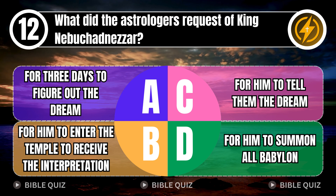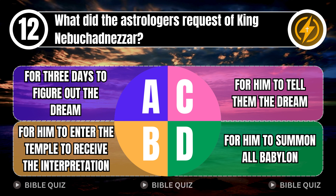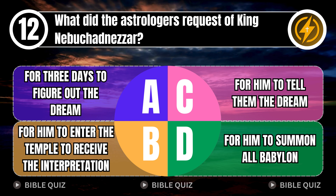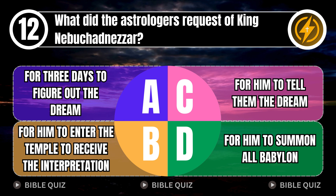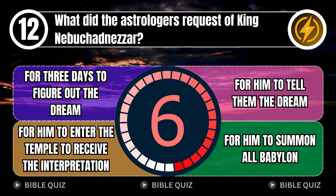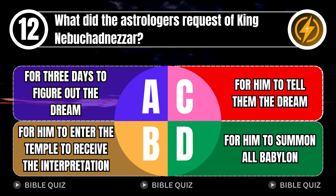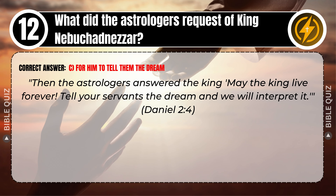Question 12: What did the astrologers request of King Nebuchadnezzar? A. For three days to figure out the dream. B. For him to enter the temple to receive the interpretation. C. For him to tell them the dream. D. For him to summon all Babylon. Correct answer: C. For him to tell them the dream. Then the astrologers answered the king, 'May the king live forever. Tell your servants the dream, and we will interpret it.' Daniel 2 verse 4.